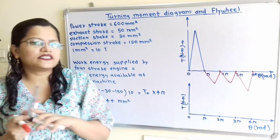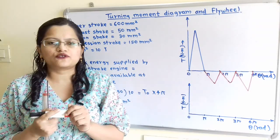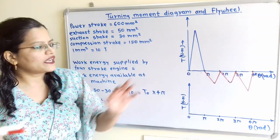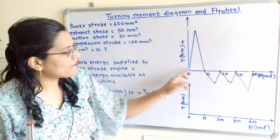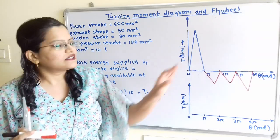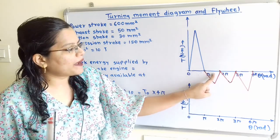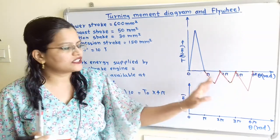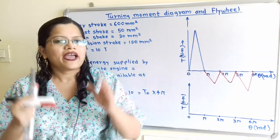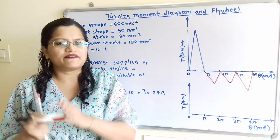This four stroke engine is attached to the flywheel and the energy is absorbed by the flywheel. However, all of the energy developed during the power stroke is not absorbed by the flywheel — part of the energy developed is consumed by the other strokes, that is during the suction stroke, compression stroke, and exhaust stroke. The remaining work energy is absorbed by the flywheel.